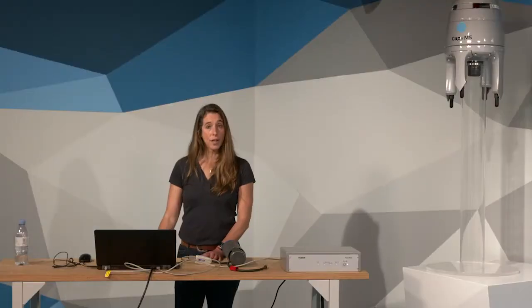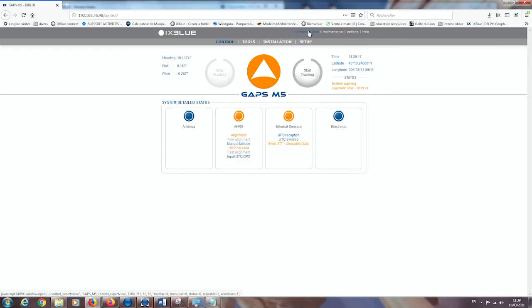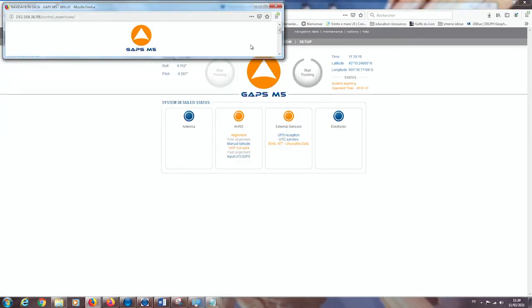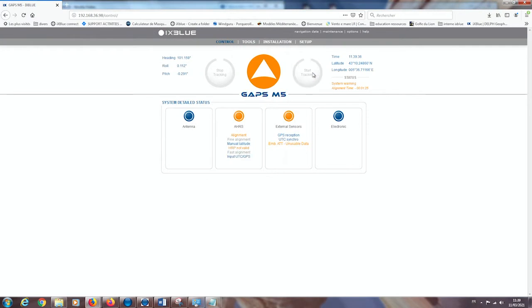Okay, during your survey you can also check the navigation data in the Web MMI. This will give you the status of the heading and attitude system status with position, if the GAPS is in tracking or not, and here you have also the GPS information with the quality of the GPS.